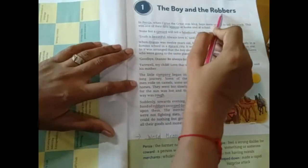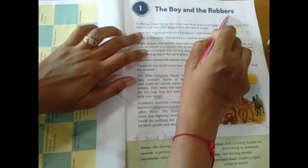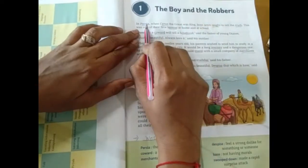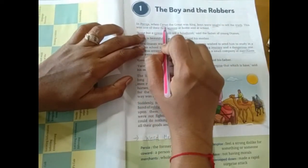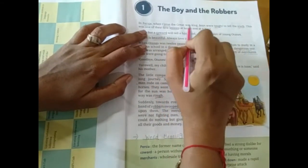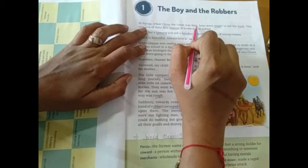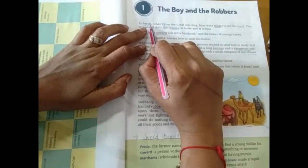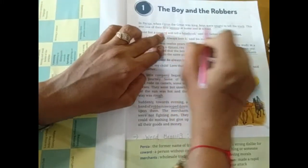The Boy and the Robbers. Robbers ka matlab kya hota hai? Lutero. Thik hai? Let's start read the story. In Persia, when Cyrus the Great was king. King tha vaha ka kaha kaha? Persia ka, Persia eek country, yani ki city hai. Cyrus tha, vaha ka king tha.